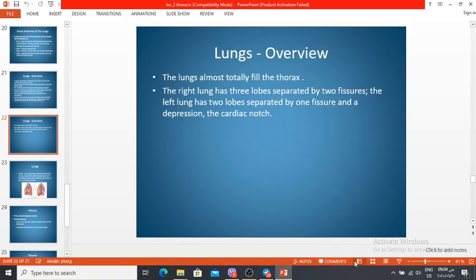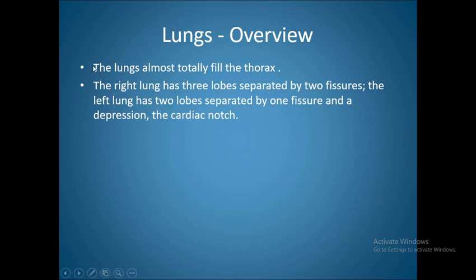The lung almost totally fills the thoracic cavity. The right lung has three lobes separated by two fissures. The left lung has two lobes separated by one fissure, and features depressions including the cardiac notch.